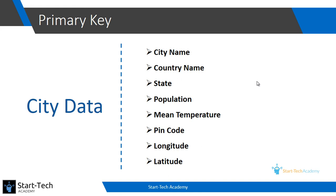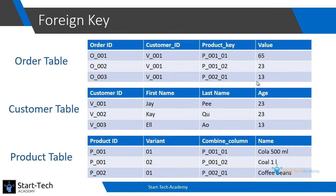I hope the concept of primary key is now clear to you. Now we will move on to the foreign key. A foreign key is a field in one table that uniquely identifies a row of another table. Let's revisit our customer, order, and product example. For our order table, we are storing order ID as our primary key, customer ID to identify the customer information from the customer table, and the product key to identify what products they are purchasing in this order. In this case, customer ID and product key are our foreign keys for this order table.